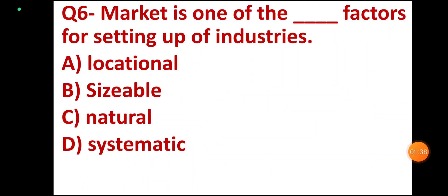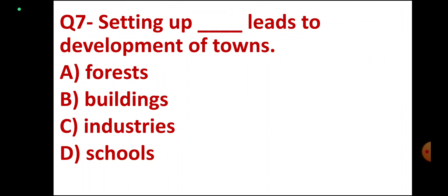Question number 6. Market is one of the DASH factors for setting up of industries. Options: Locational, Sizable, Natural, Systematic. Correct answer: Locational.